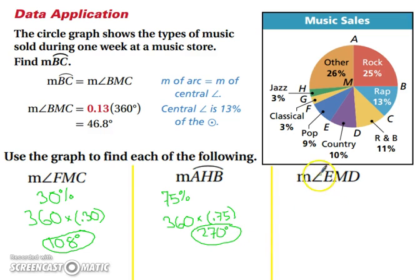And our last one, the measure of angle EMD. EMD is 10%, so 360 times our 10% is going to give us 36 degrees.